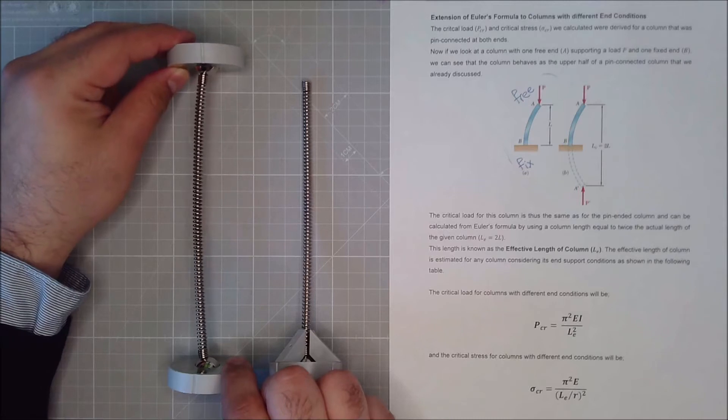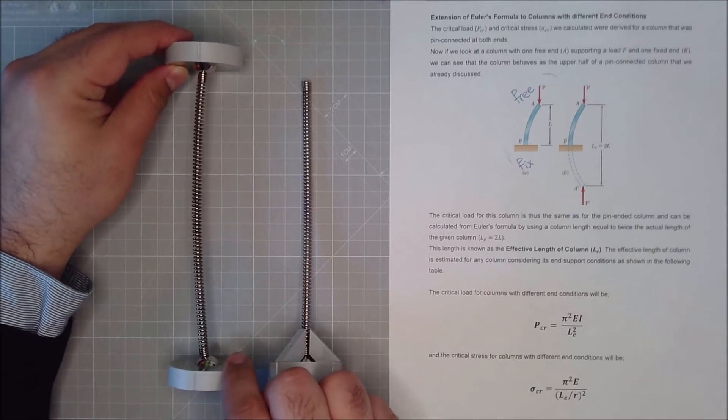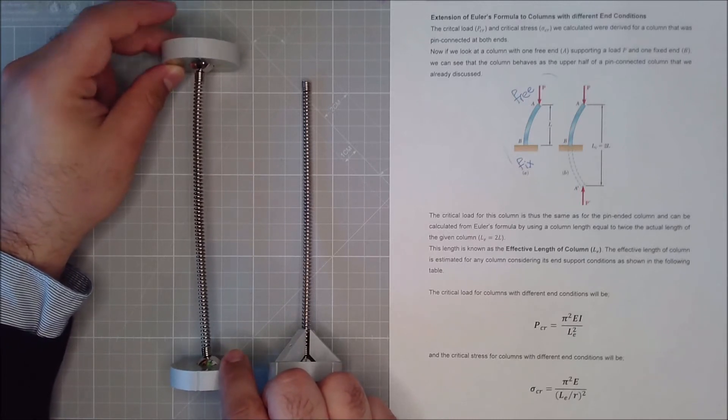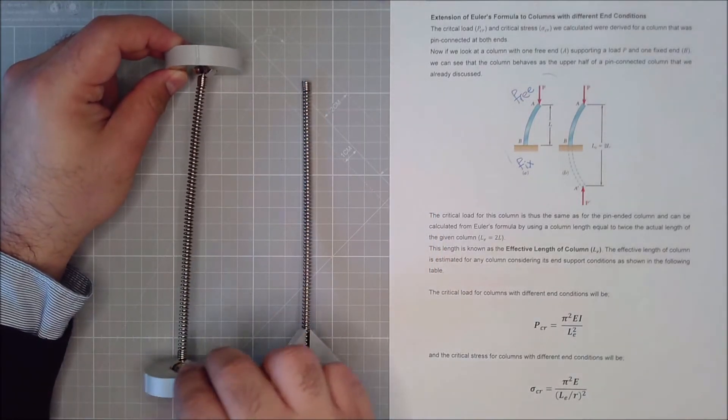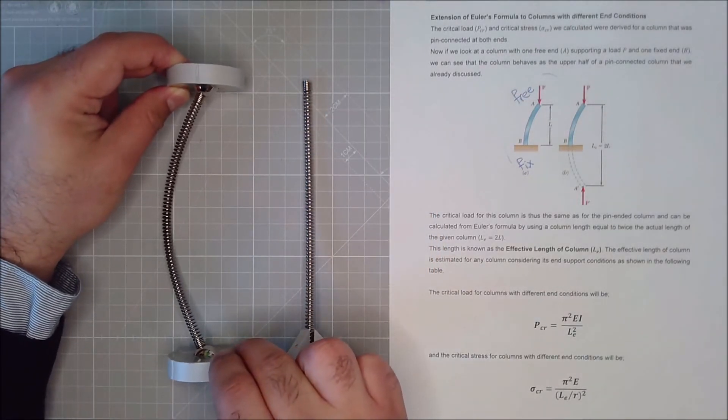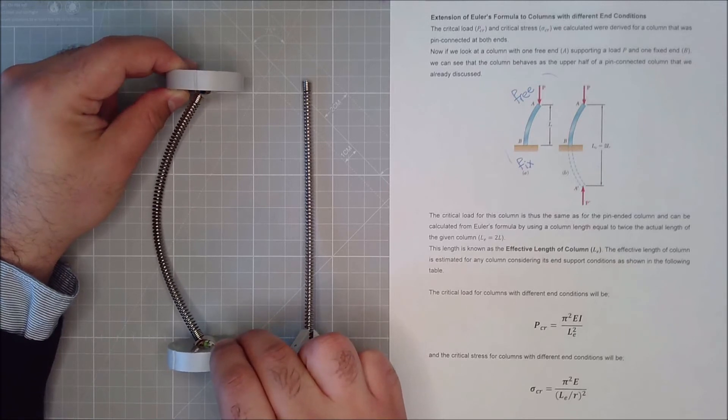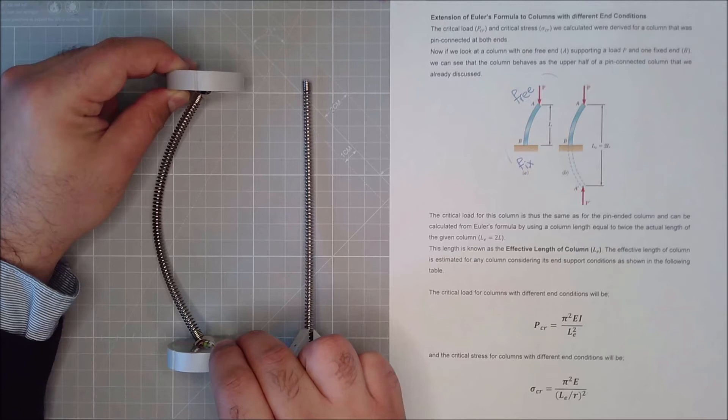Now the critical load and the critical stress that we calculated was for a beam with pin-pin conditions at both ends, pin and pin. And then if this column buckles, it will be something similar to this, a perfect buckle and with a maximum at its middle.